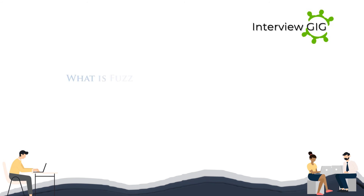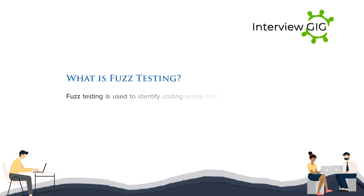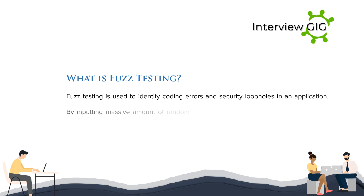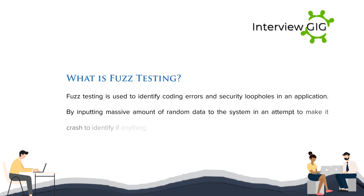What is fuzz testing? Fuzz testing is used to identify coding errors and security loopholes in an application by inputting a massive amount of random data to the system in an attempt to make it crash and identify if anything breaks in the application.